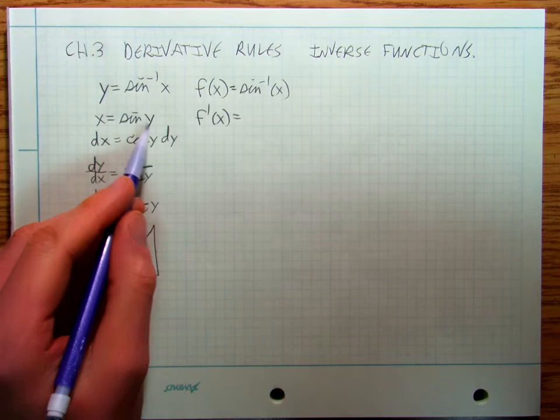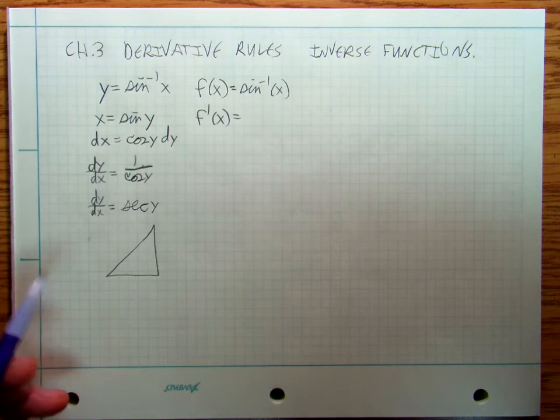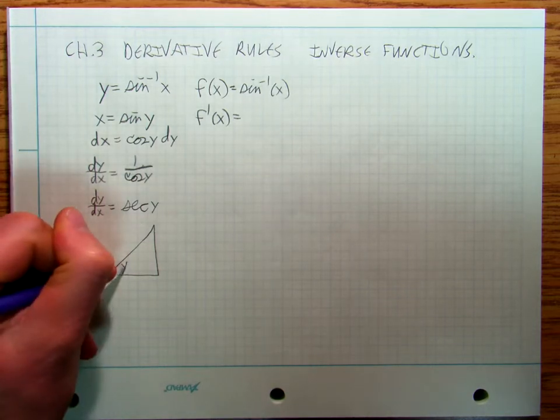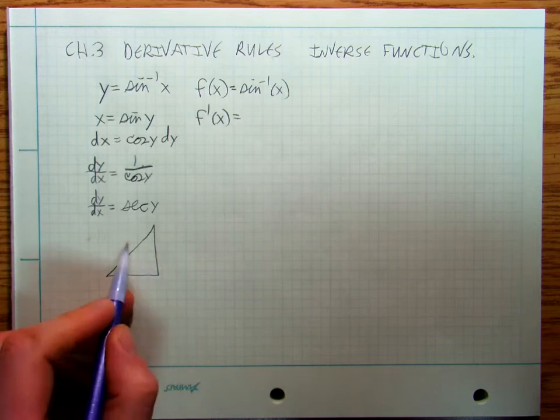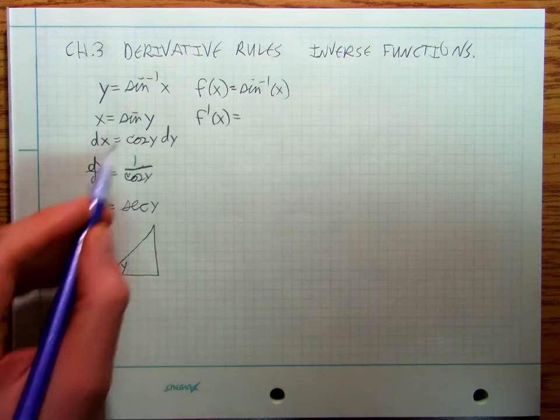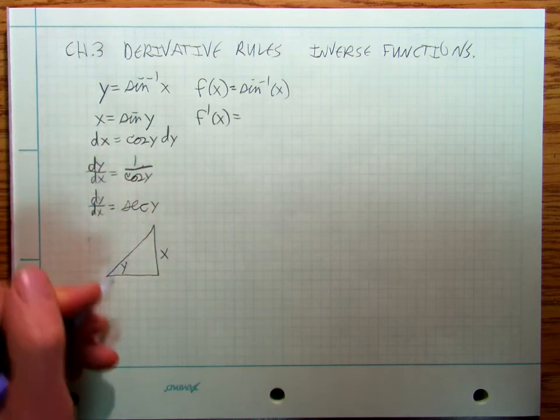I'm going to look at this and say, sine y – well, y in this case is an angle. Let's make it that one. And sine y is going to be opposite over hypotenuse. So sine y is opposite over my hypotenuse.